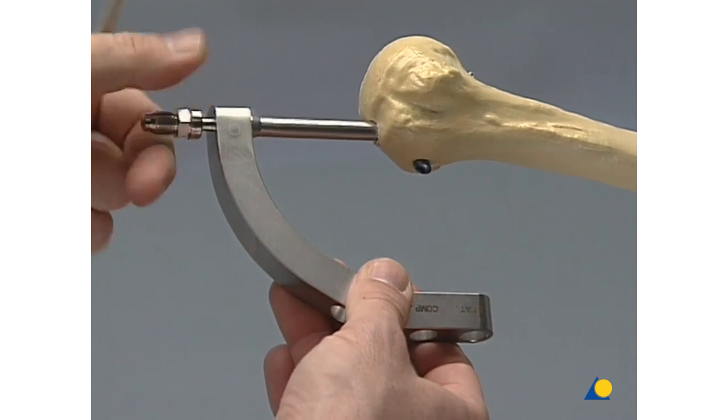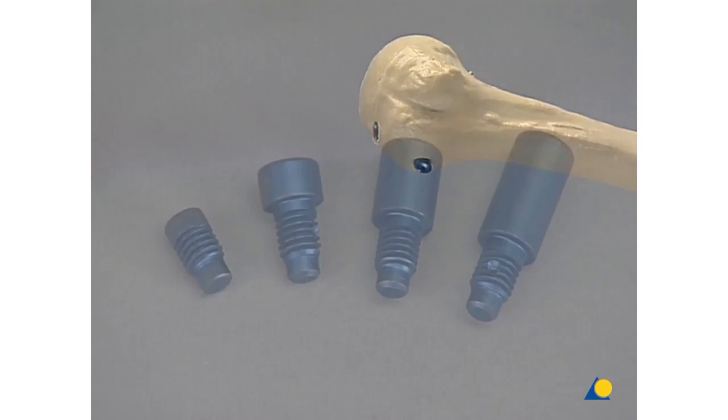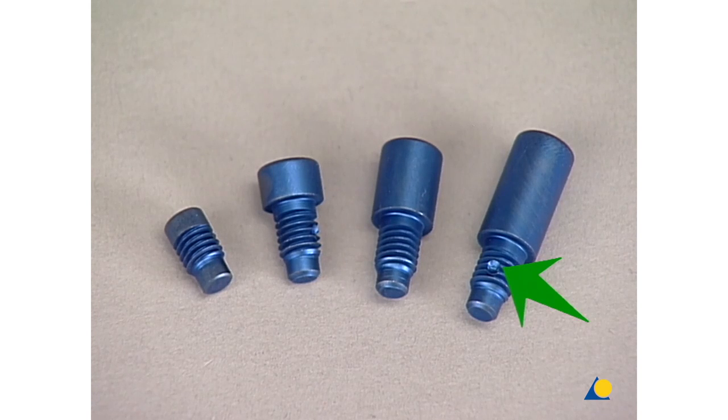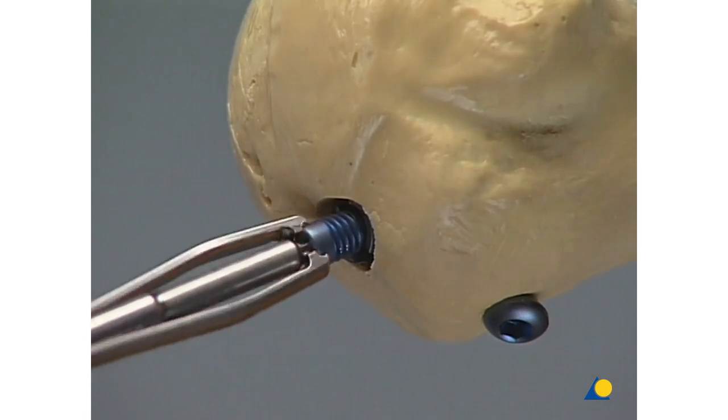To prevent bone ingrowth and to adjust the nail length after insertion, choose one of the end caps with 15, 10, 5, or 0 mm lengthening. Note that the final portion of the thread is scarified to prevent loosening. This will produce additional resistance as the end cap is screwed into the nail. Here, a 0 mm end cap is inserted.